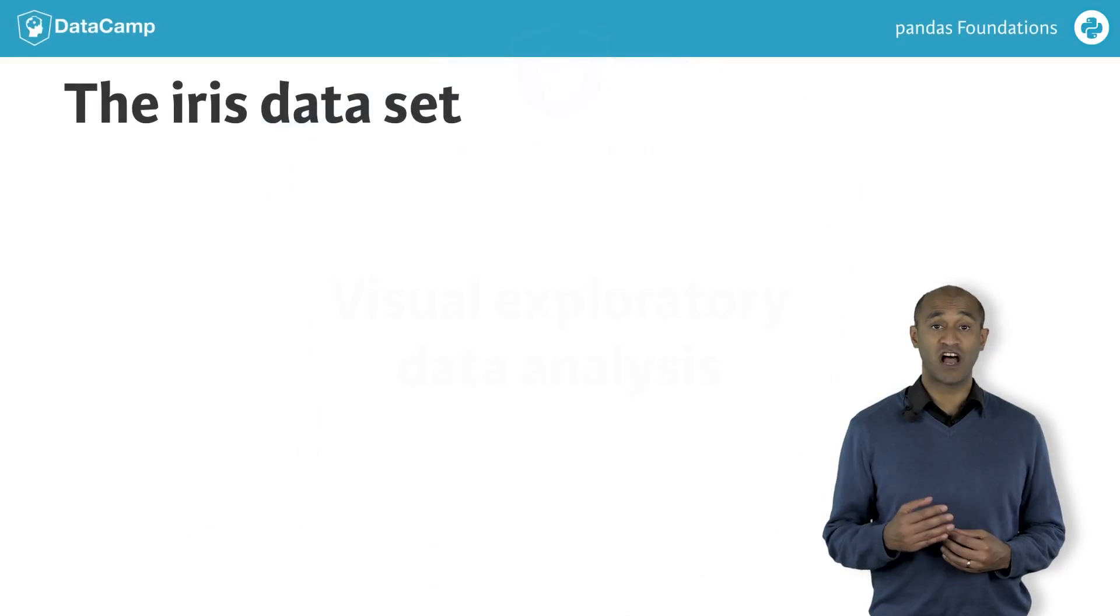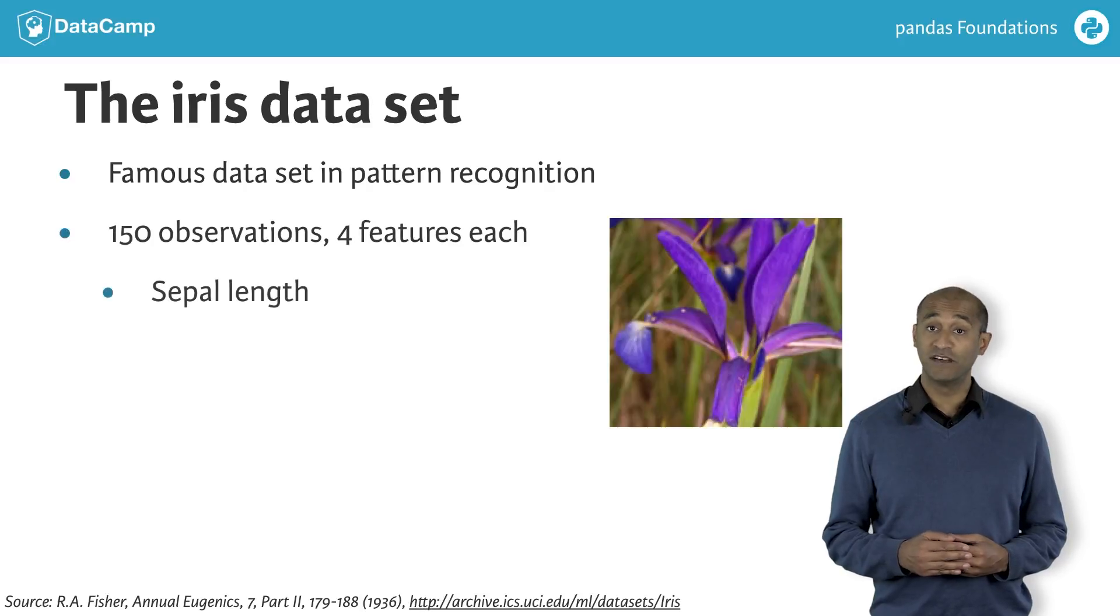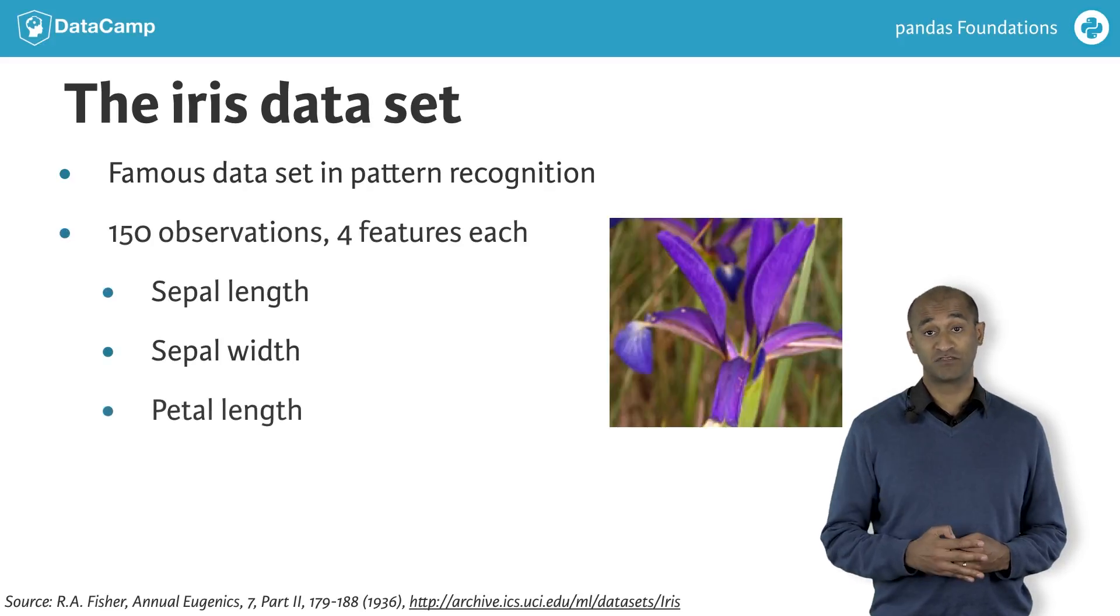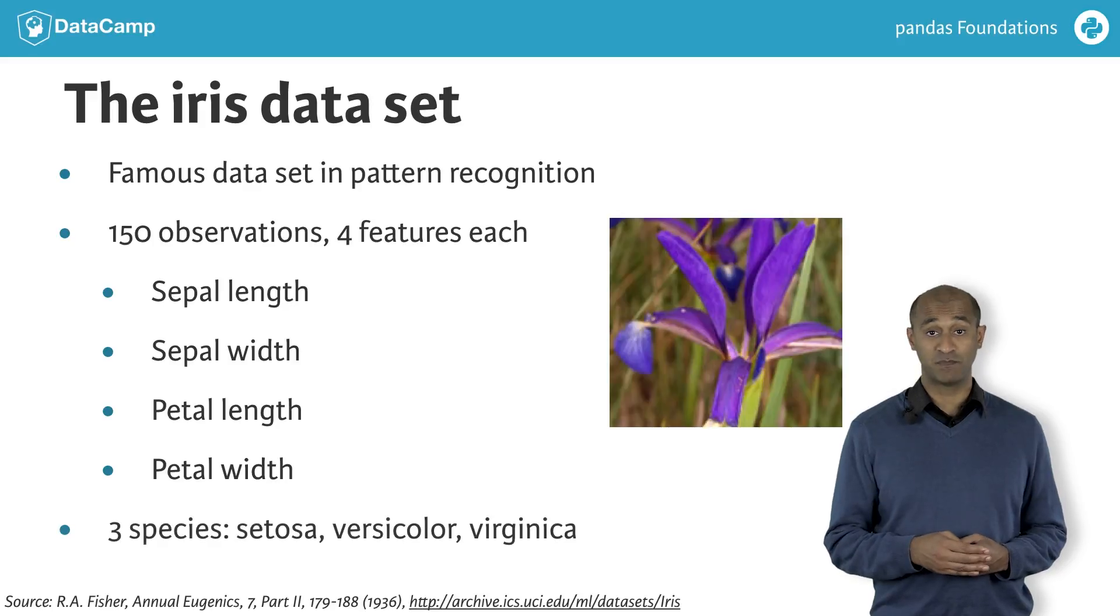We'll consider Fisher's iris flower data. There are 150 observations with four measurements from each. There are also three distinct flower species.